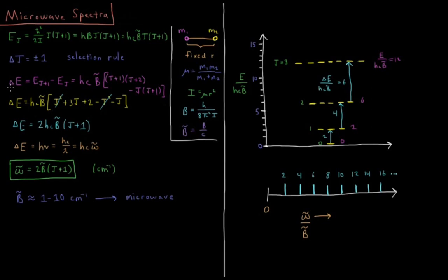The change in energy is going to be the energy of the photon that we absorb. The change in energy, delta e, is going to be e of j plus 1 minus e of j. That will be hc b bar times j plus 1 times j plus 2 for j plus 1 minus j times j plus 1 for e sub j. So we can FOIL these out, multiply those out. Delta e equals hc b bar j squared plus 3j plus 2, that polynomial minus j squared plus j, that polynomial, so minus j squared minus j.